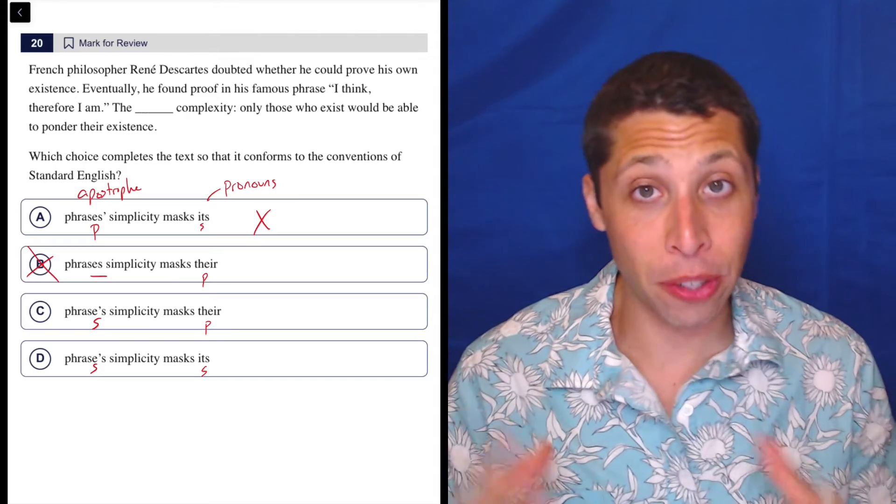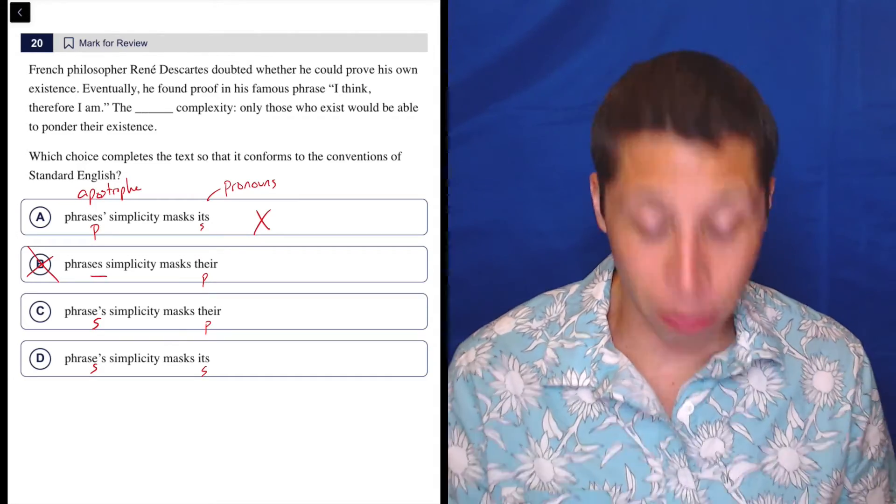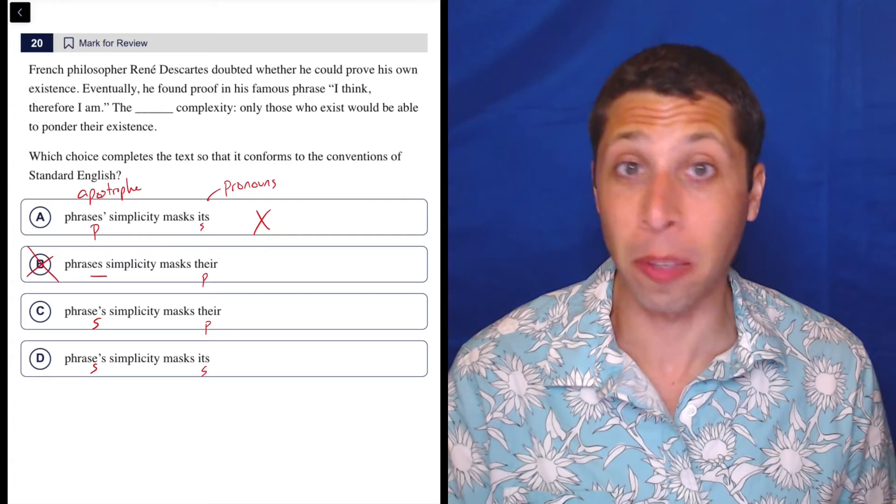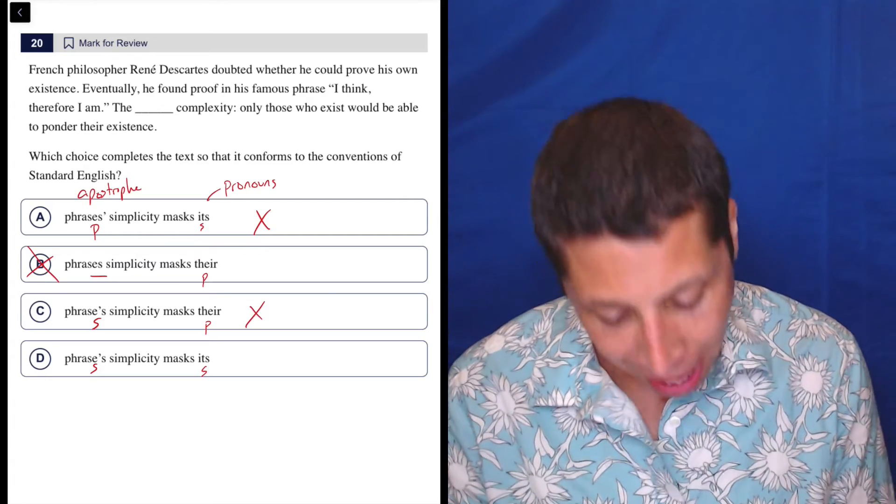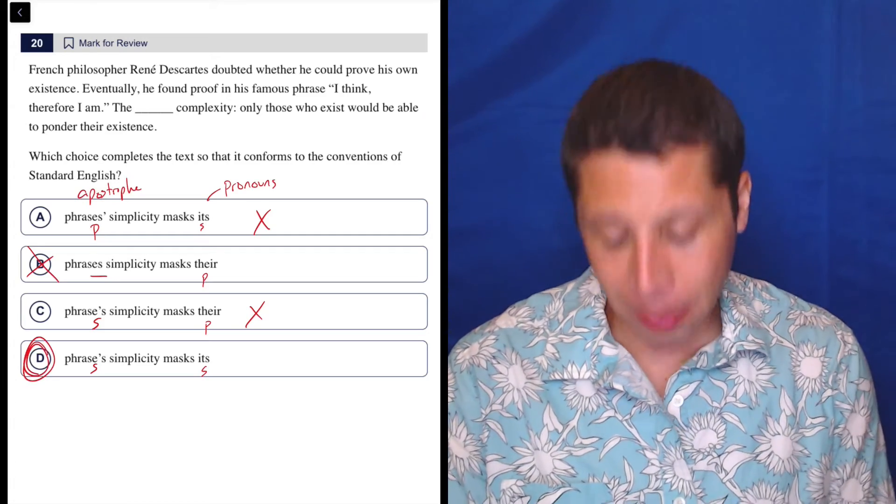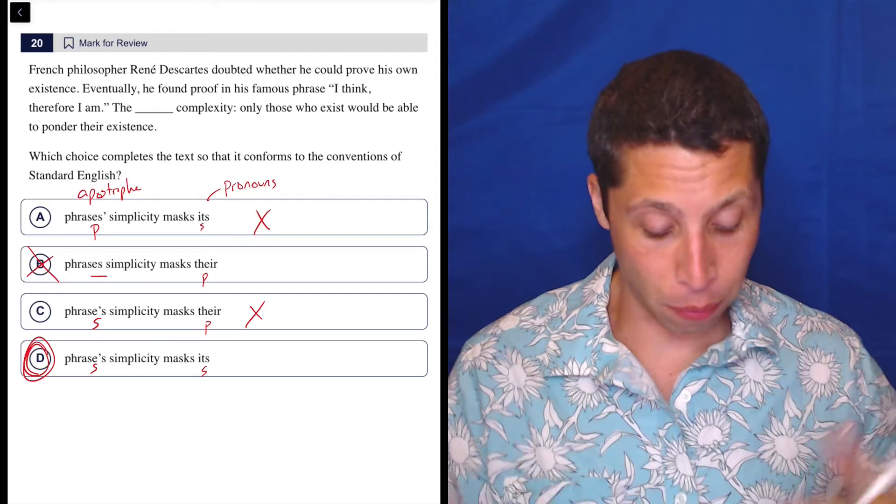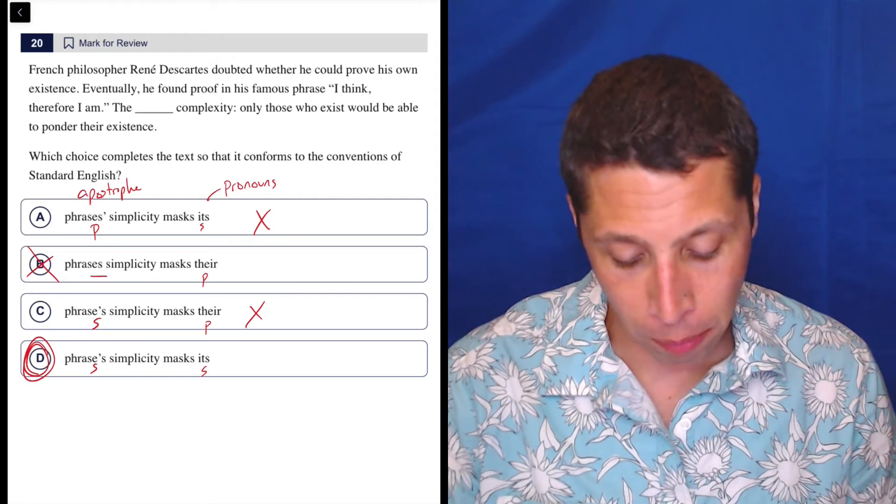In choice C, we have the opposite. We start with the singular phrase and then we are reversing it and going now with a plural for no reason. That's what the word there does. It's a plural pronoun. Whereas D solves the problem. They're both singular. That's going to be the answer because they both are talking about the same thing. A single phrase and then we're referring to it as it's later, referring back to it.